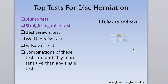Definitely need to know the key orthopedic tests for disc herniation: Slump, Straight Leg Raise, Bechterew's (also the seated straight leg raise test), Well Leg Raise, and Valsalva. Know what they are, but more importantly know that these five tests are for disc herniation. Slump is probably the best one for board purposes; in the real world, straight leg raise is more practical since slump is so comprehensive that a patient with an acute disc may not tolerate it.